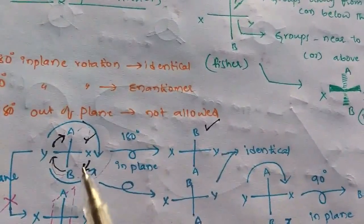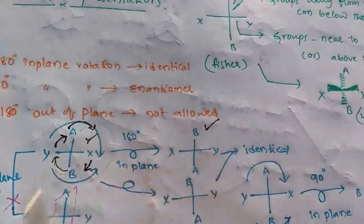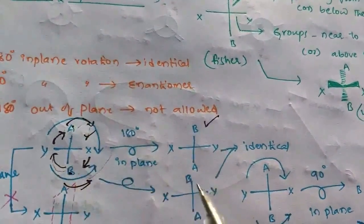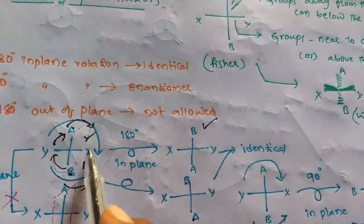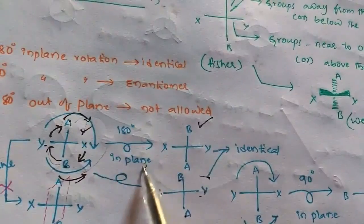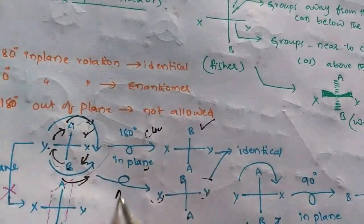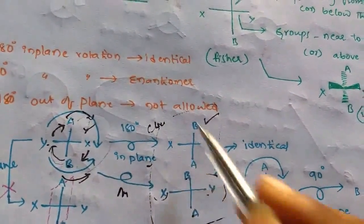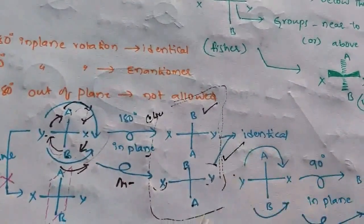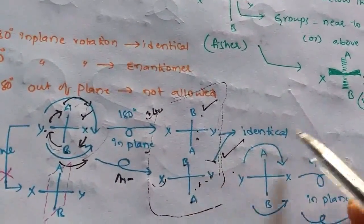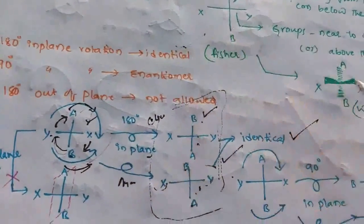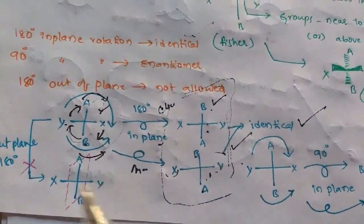After the clockwise 180-degree in-plane rotation, we get that structure. If we rotate 180 degrees anti-clockwise in-plane, B takes A's position, A takes B's position, X takes Y's position, and Y takes X's position. Checking both results — the clockwise and anti-clockwise 180-degree in-plane rotations — we get identical representations. So whenever we rotate 180 degrees in-plane, we get identical structures.